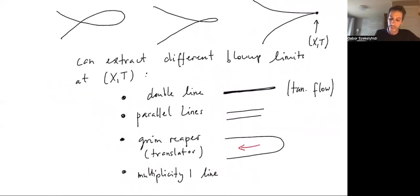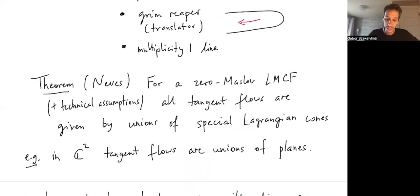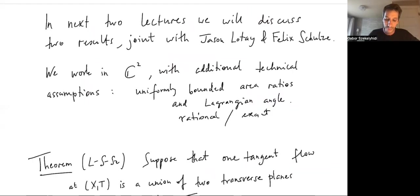All the possible blow ups that we saw in this curve shortening flow case were either static, like a double line, two parallel lines, or also this multiplicity one line, or a translator, like this grim reaper. And notice that this does not have to be the case in general. This is not some very general result that blow ups are always like static or translators. This is something very special to the Lagrangian mean curvature flow.